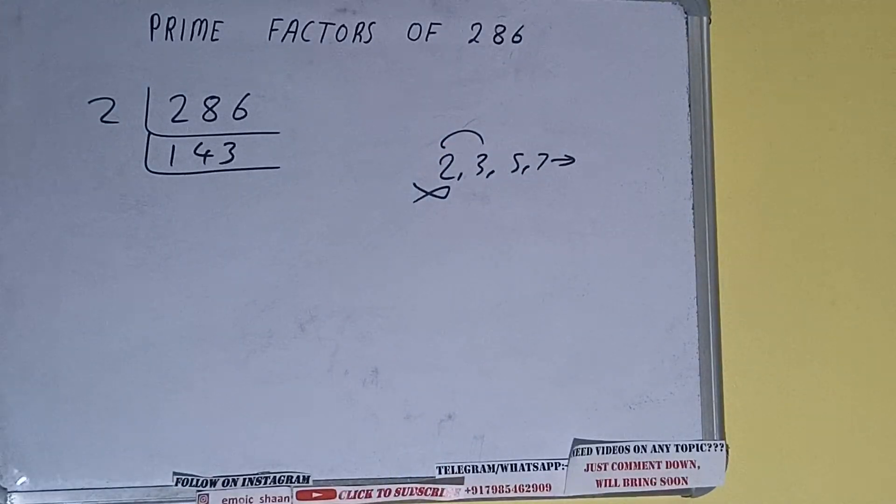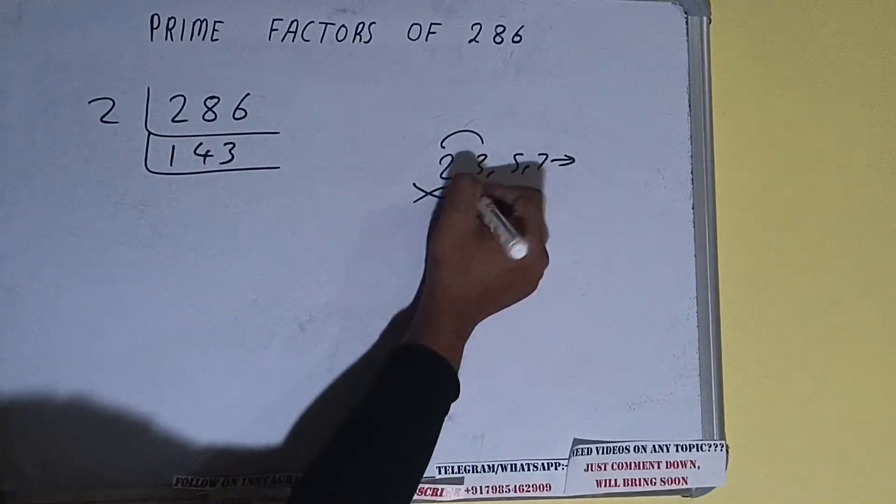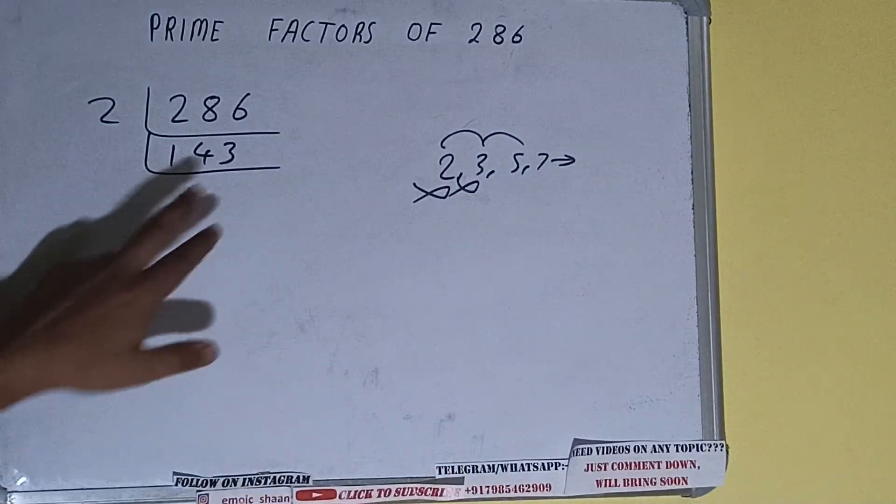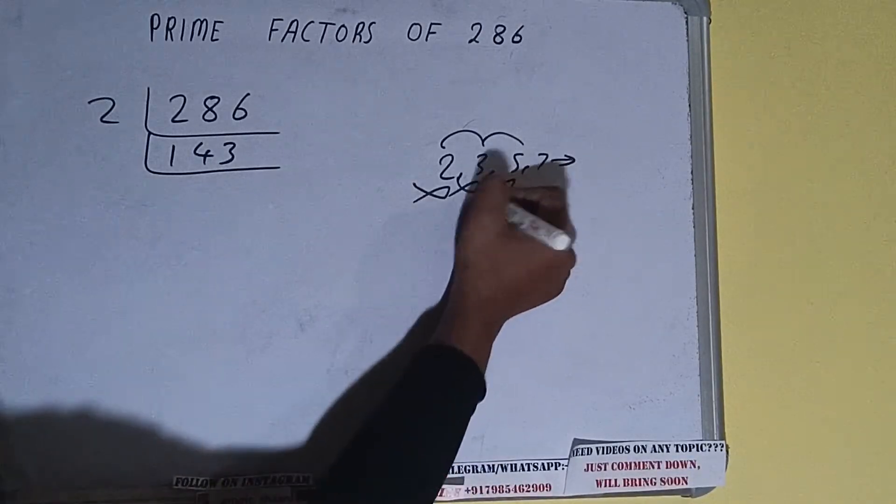next lowest prime number, that is 3. 3 fours are 12... 23 with 3 is also not divisible. Let's check with 5. The last digit is neither 5 nor 0, so it is not divisible by 5 also. Let's